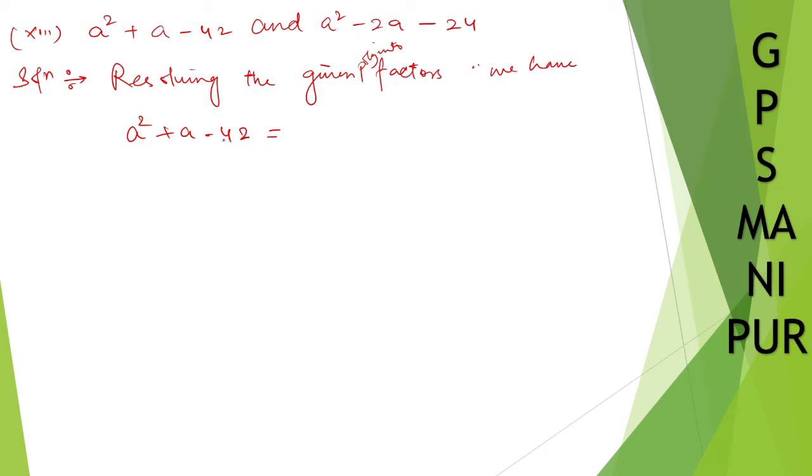It is minus sign here, so we need to find two numbers. 42: 7 times 6 is 42. Now, a² + 7 - 6... 7 times 6 is 42 and 7 minus 6 is 1. So a² + 7a - 6a - 42.